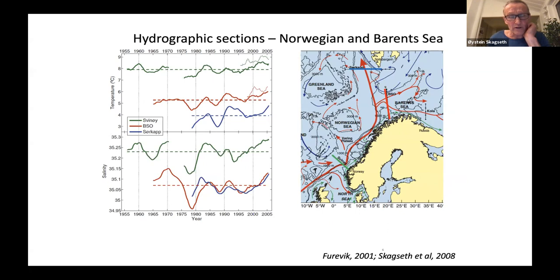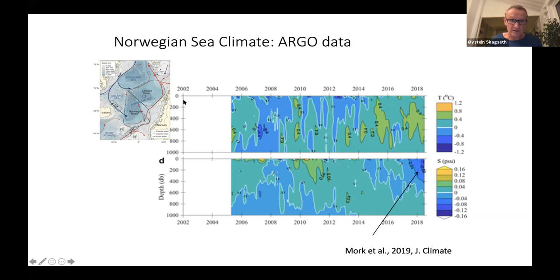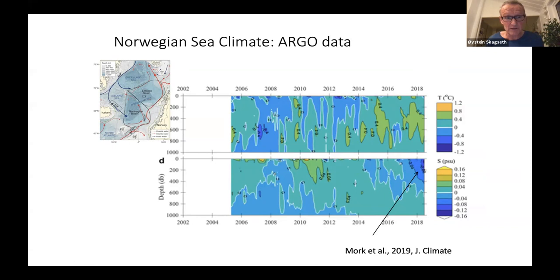The hydrography in the Norwegian Sea is well covered. Argo data — looking at ocean climate anomalies from climatology as a function of depth and time — shows this has been warmer in the late period. Notably, salinity dropped quite a lot in the recent few years. The Argo data provides very important information and is a robust measure for people doing modeling.